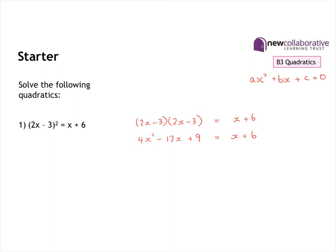So if we rearrange that equation further, that will give us 4x squared, subtract 13x, add 3, equals zero.